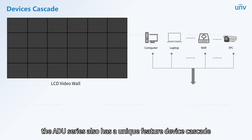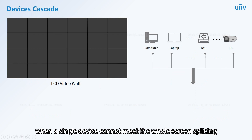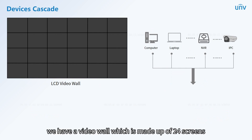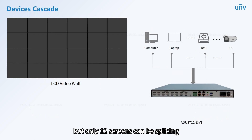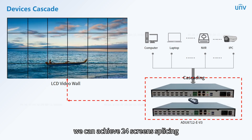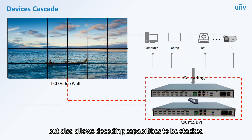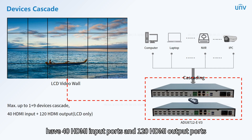The ADU series also has a unique feature: device cascade. This function allows multiple devices to be cascaded when a single device cannot meet the whole screen splicing requirement. For example, with a video wall made up of 24 screens, only 12 screens can be spliced using one ADU 8712 EV3, but using two ADUs in cascade achieves 24-screen splicing. The cascade function not only enables more screens to be spliced but also stacks decoding capabilities, supporting a maximum of 10-device cascade with 40 HDMI input ports and 120 HDMI output ports.